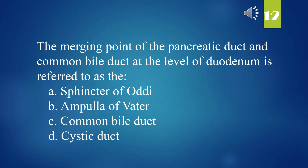The merging point of the pancreatic duct and common bile duct at the level of the duodenum is referred to as: A. Sphincter of Oddi. B. Ampulla of Vater. C. Common bile duct. D. Cystic duct. The answer is B. Ampulla of Vater.